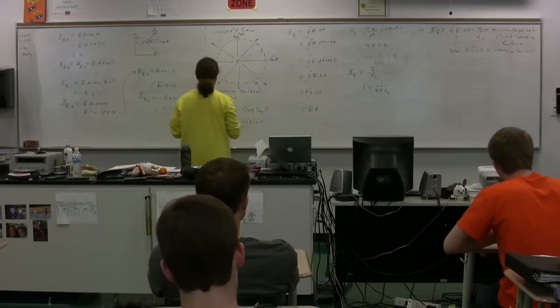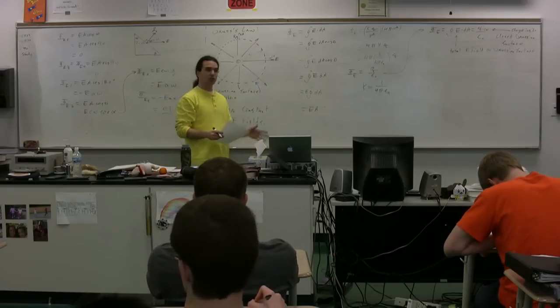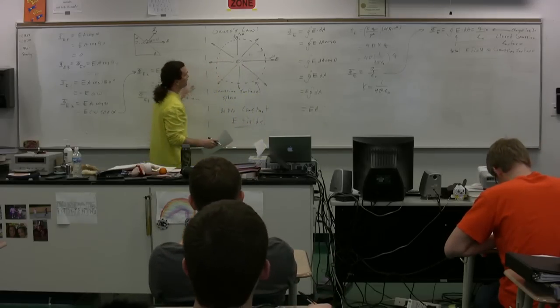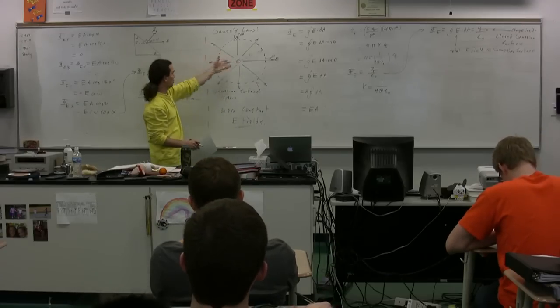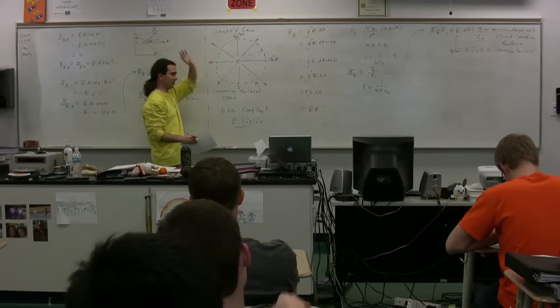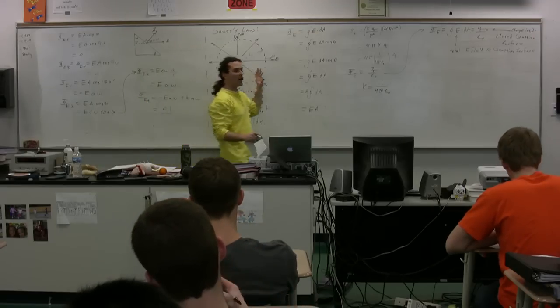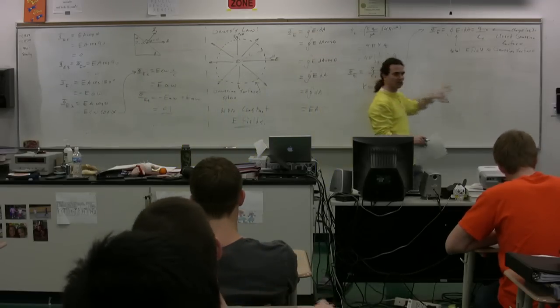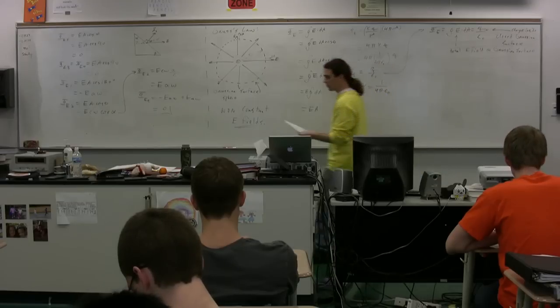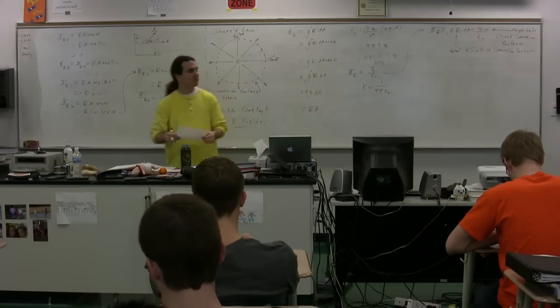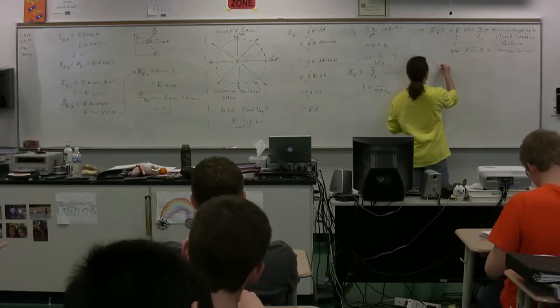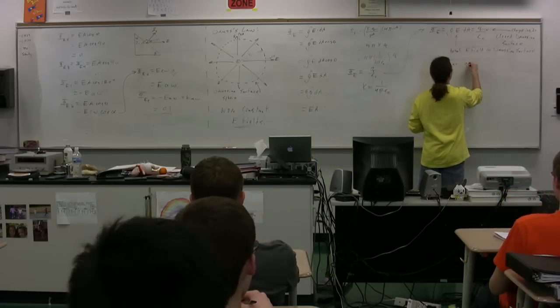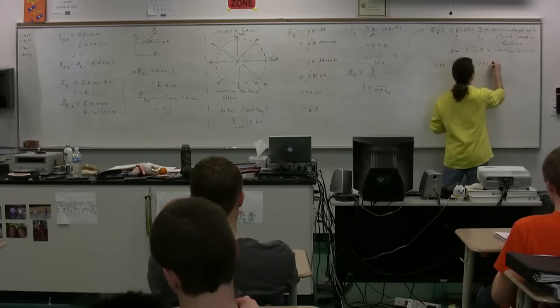Now, this is true for any shape. The truth is, we could have picked a Gaussian surface that was any shape here. It could have been a cube. It could have been a random shape. And it will work out. Mathematically, it gets really complicated to try to do those. So, we only prove it using a sphere. But, please realize that this is true for any shape, Gaussian surface.